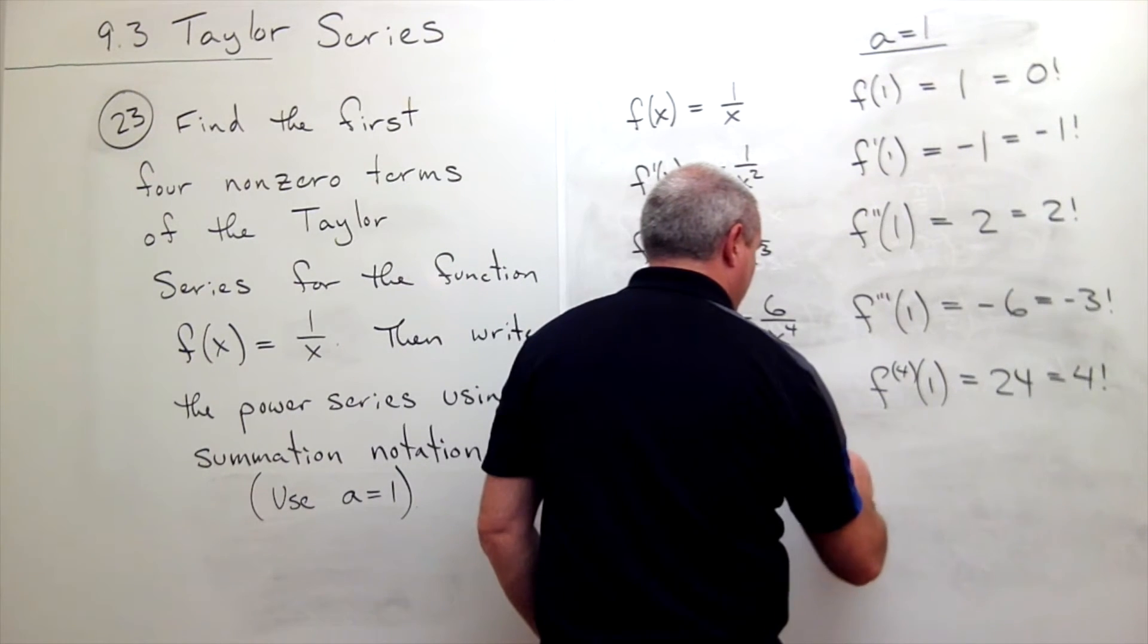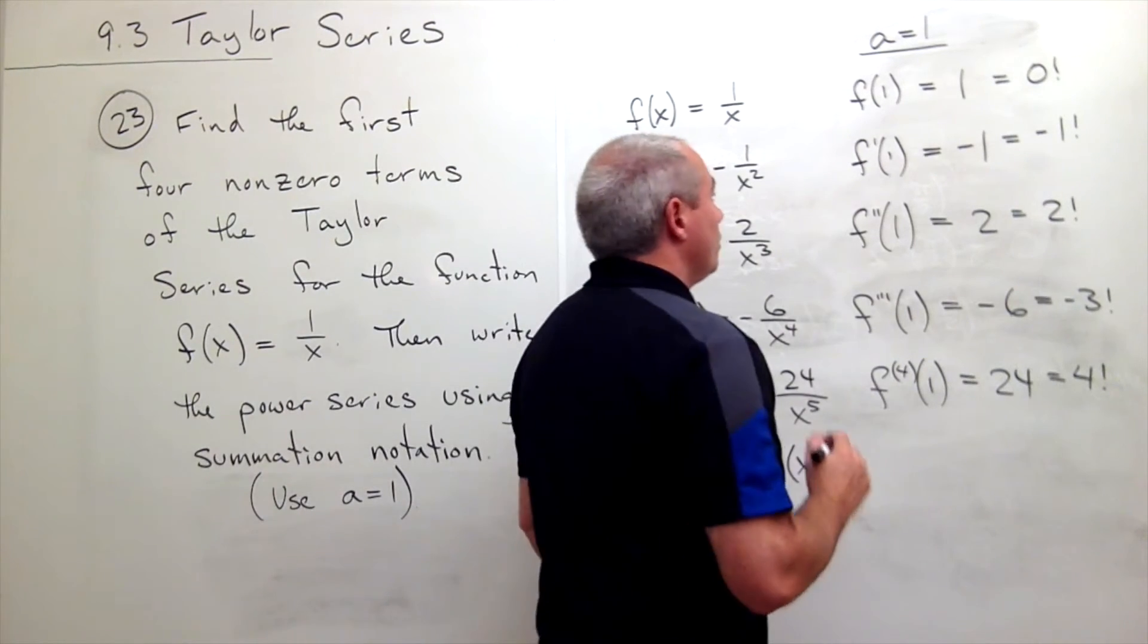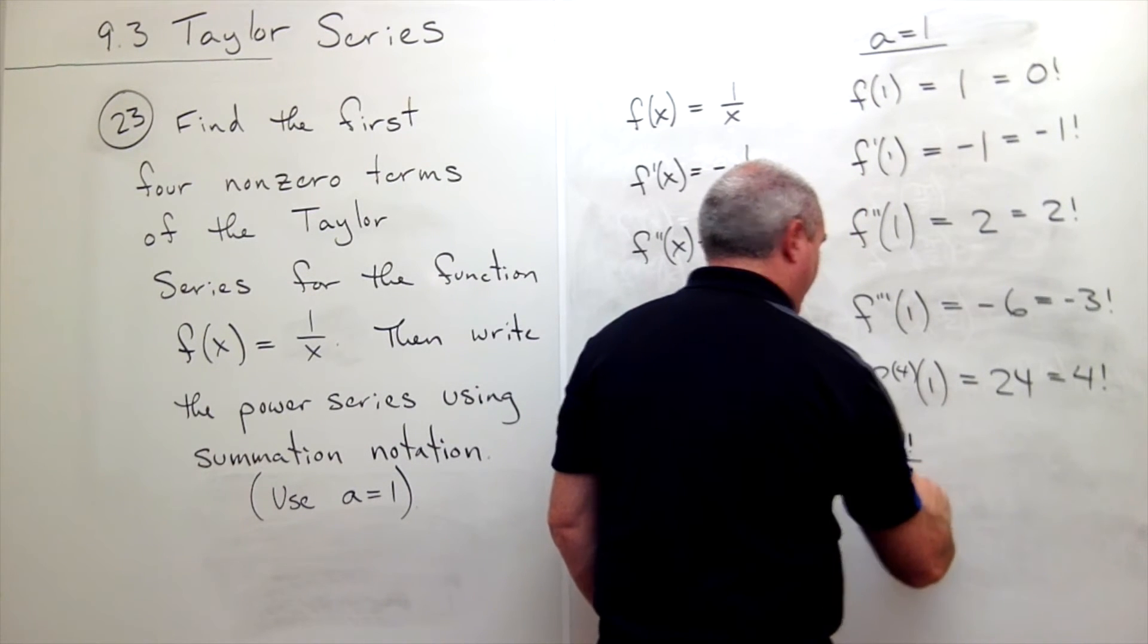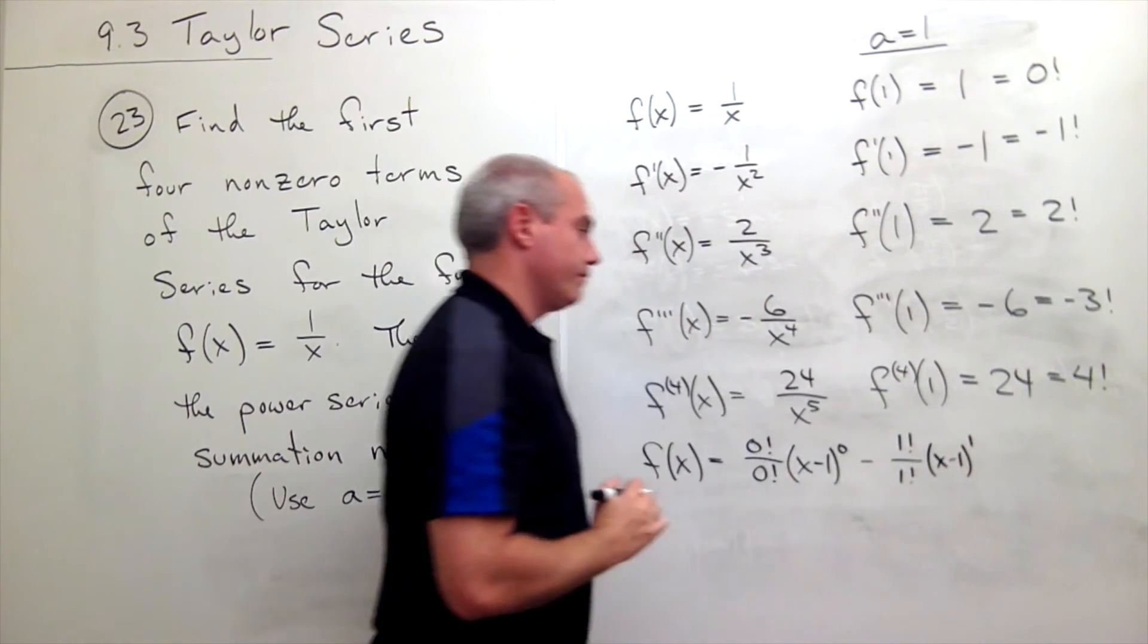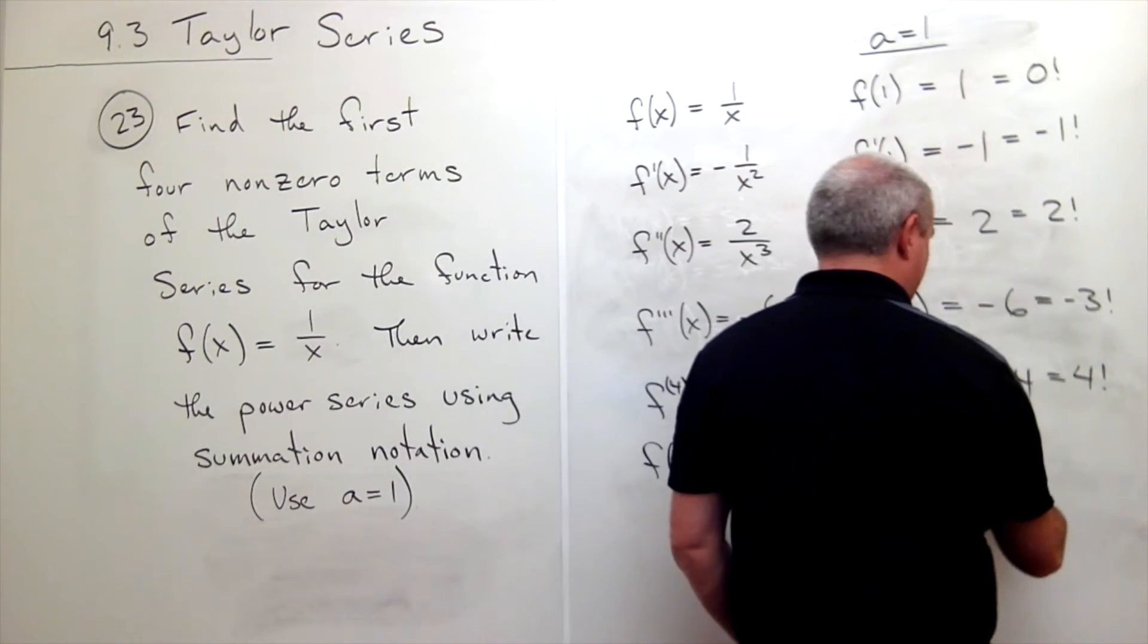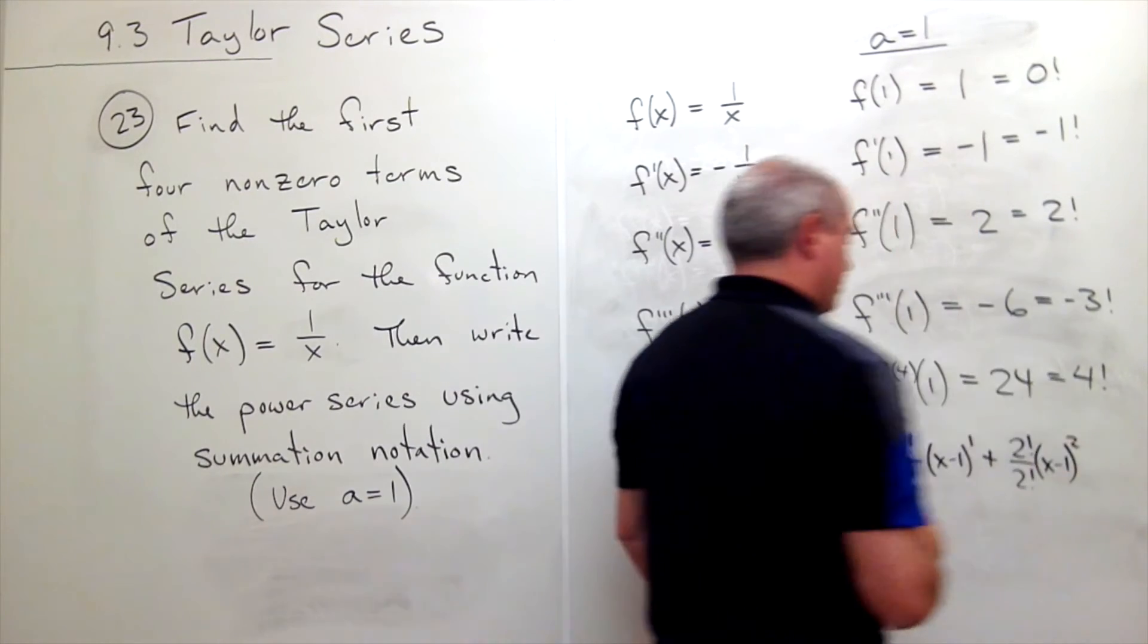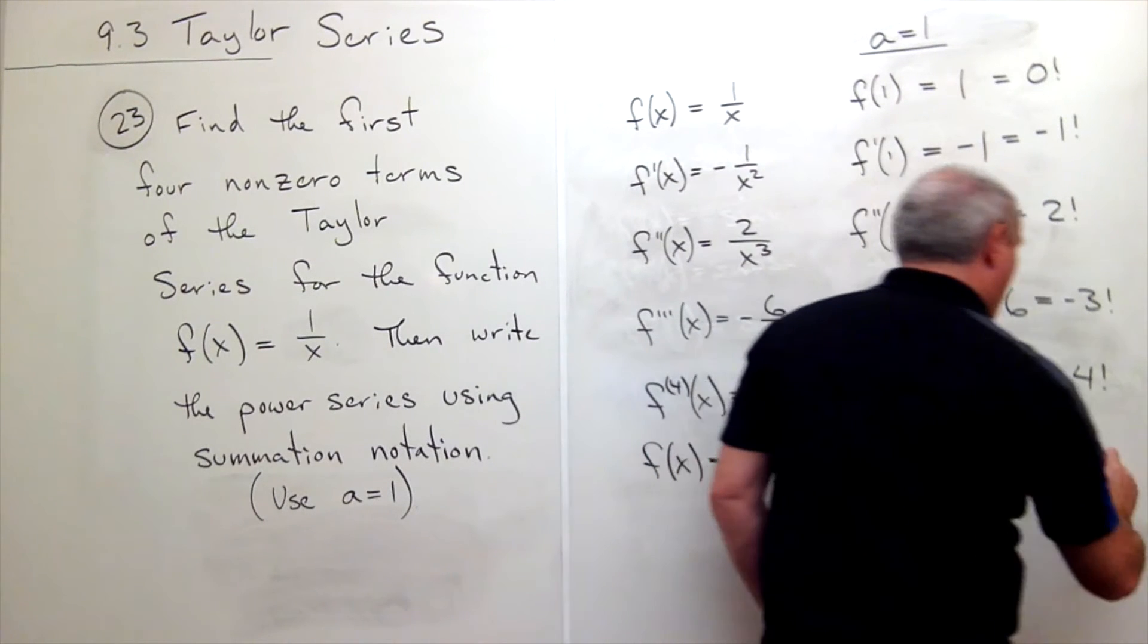Next term would be plus 2 factorial over 2 factorial times x minus 1 squared, and finally our fourth term that would be nonzero would be minus 3 factorial over 3 factorial times x minus 1 cubed.